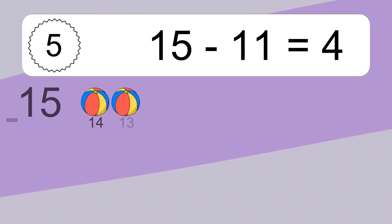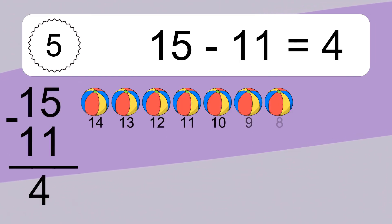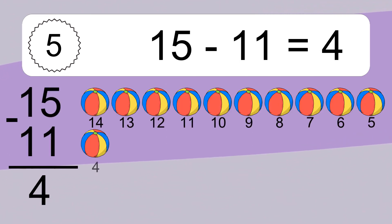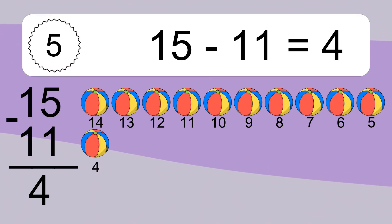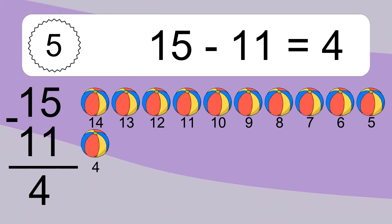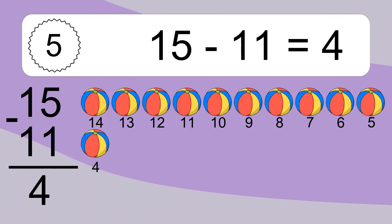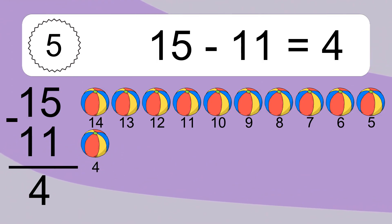15 minus 11 equals what? 15 minus 11 equals 4. Let's count it. 14, 13, 12, 11, 10, 9, 8, 7, 6, 5, 4.